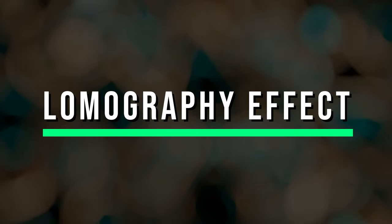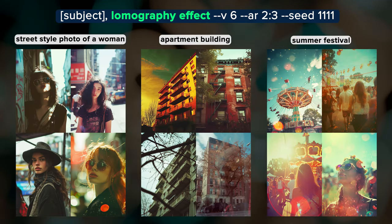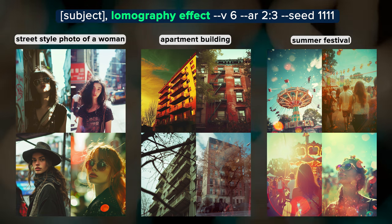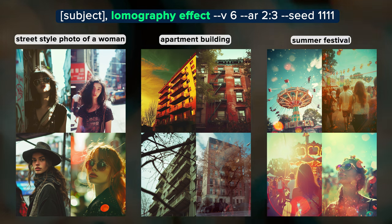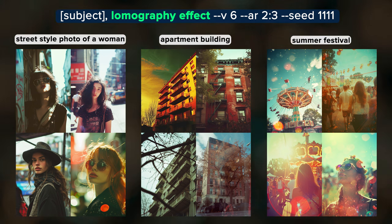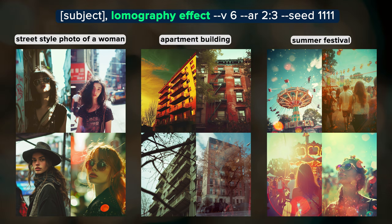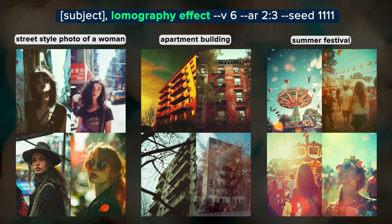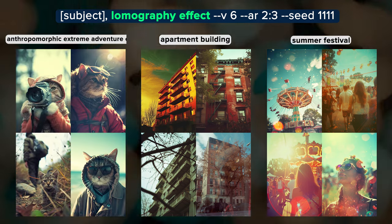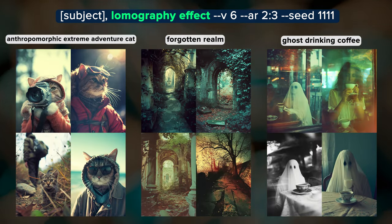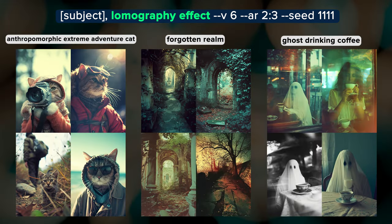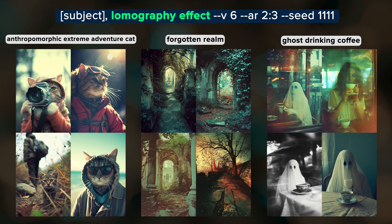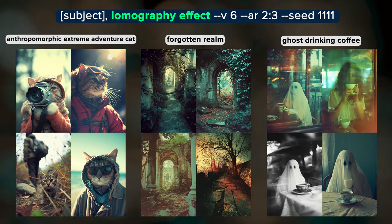Lomography is a type of photography that embraces imperfections. Lomography images are often taken with plastic toy cameras that have unique and unpredictable lens optics. The resulting images have a spontaneous, experimental, and retro feel with flaws that become artistic features. You can see the light leaks and lens flares in these images. Some look a little out of focus or as if they were accidental shots like the apartment building in the lower left. We got a boss cat in a hoodie this time — probably my favorite cat so far. The forgotten realm is appropriately overgrown and I like the faded and slightly blurry look of the top two ghost photos.